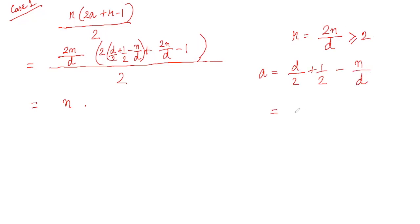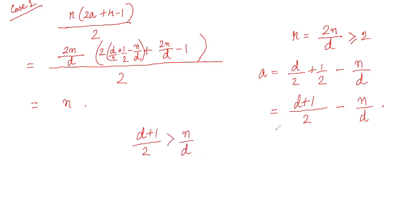There is a condition. I have taken r to be 2n over d, and since d is a divisor of n, r is greater than or equal to 2, satisfying the problem's requirement that r is greater than 1. Now a must also be an integer and positive. So a equals d over 2 plus one-half minus n over d, which is (d plus 1)/2 minus n/d. Since d is odd, (d plus 1)/2 is an integer, and n/d is also an integer. We need (d plus 1)/2 strictly greater than n/d so that a is greater than or equal to 1.